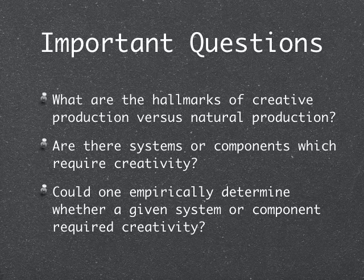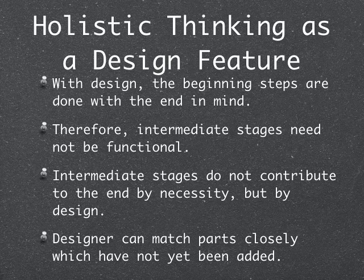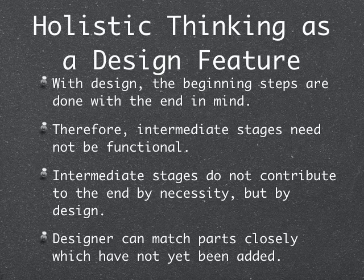Let's tackle the first question: What are the hallmarks of items that are produced by creativity? One of the main ones is wholism. Wholism is the ability to think of a system as a whole collection of parts rather than as the individual parts themselves. That is, you can design an end product and build it from beginning to end with the end in mind. The intermediate stages don't need to be functional — they only need to contribute toward the final design, not by physical necessity, but by design. They are stages of design.